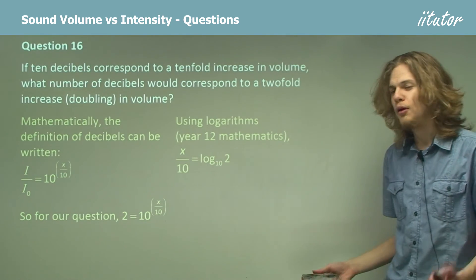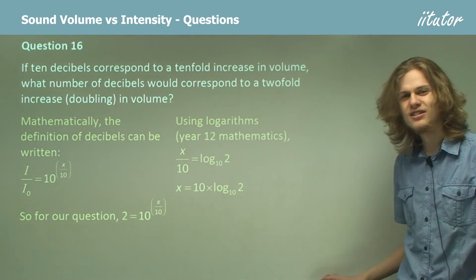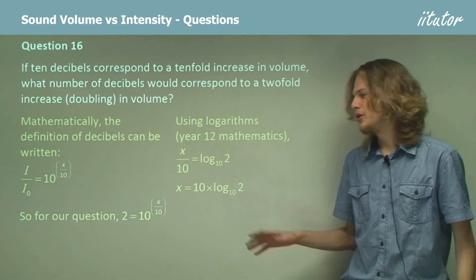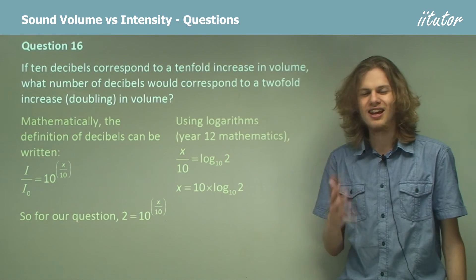Before we do that though, we can multiply both sides by 10, make it a bit easier for ourselves. And it turns out that there are a whole number of rules and identities that we can use with logarithms, but we don't really need to get into those right now.